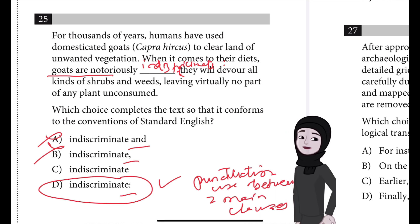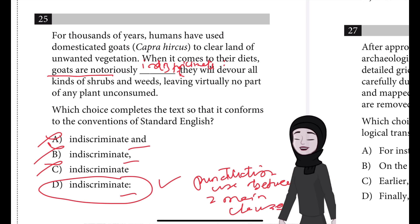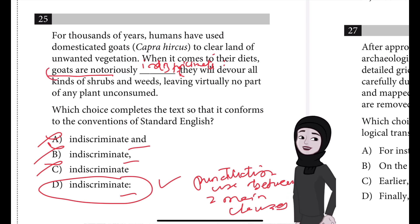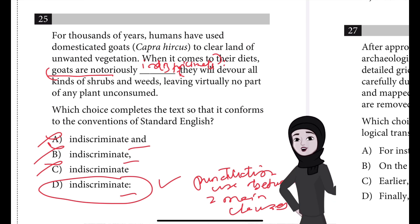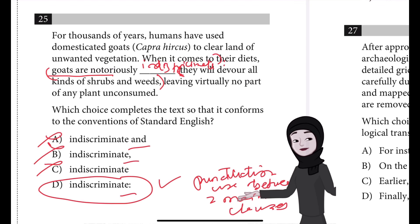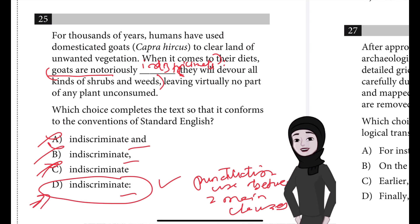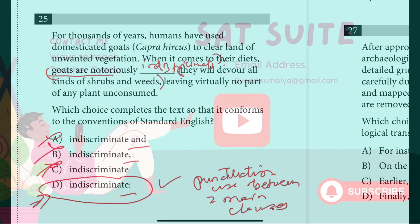Choice C is incorrect because it results in a run-on sentence. The two main clauses — from 'goats' to 'indiscriminate' and then from 'they' to 'weeds' — are fused without punctuation, 'and', or a conjunction. So the best answer is D.